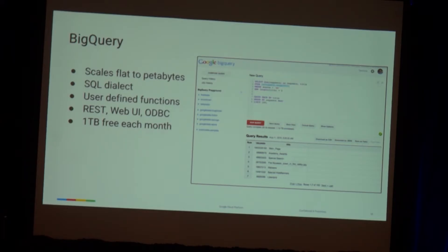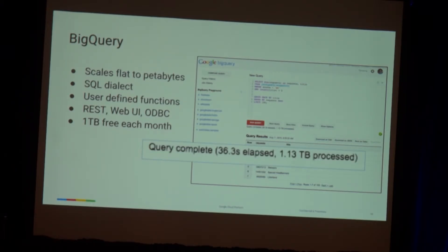Most people interact with BigQuery from a REST API, although there's a web UI I'll use for the demos. You can also point any ODBC dashboard at BigQuery and it will suddenly work with petabytes of data — just make sure you have caching on. The first terabyte of usage each month is free, and after that it's five dollars per terabyte. Here's an example query — in 36 seconds we ran a query that processed a terabyte of data, looking through Wikipedia logs.